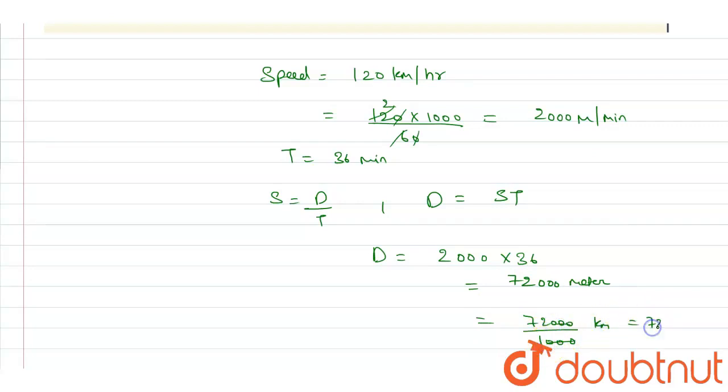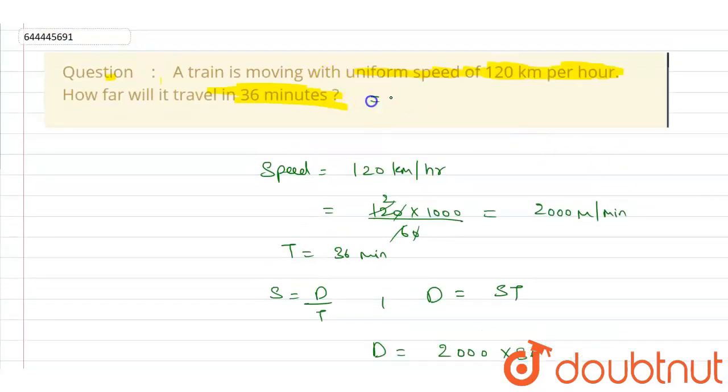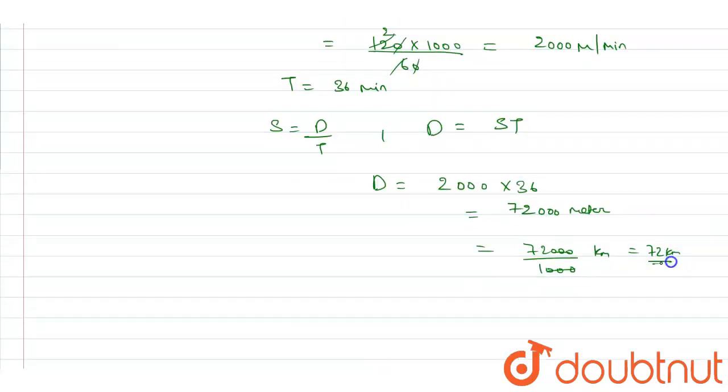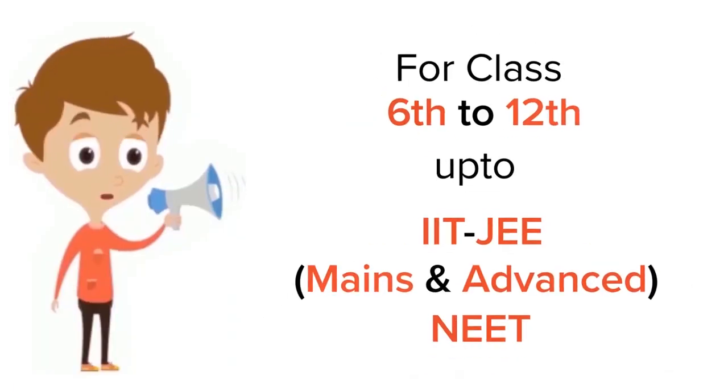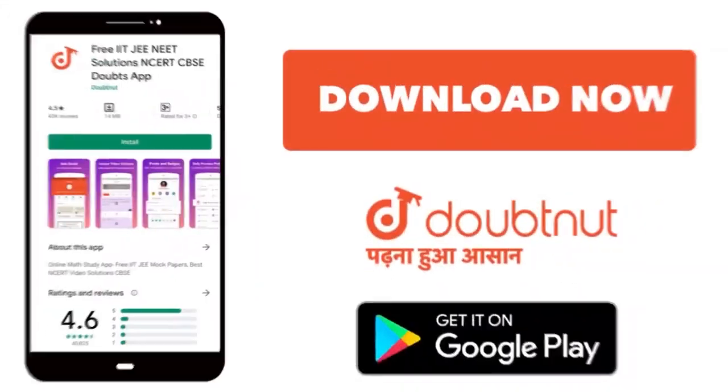So it will cover a distance of 72 kilometers with a speed of 120 kilometers per hour in 36 minutes. Thank you. For class 6 to 12, IIT-JEE and NEET level, trusted by more than 5 crore students, download Doubtnut app today.